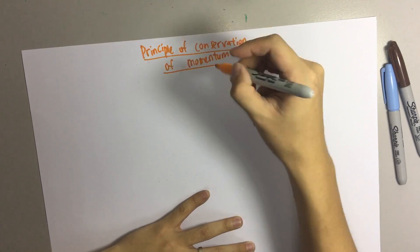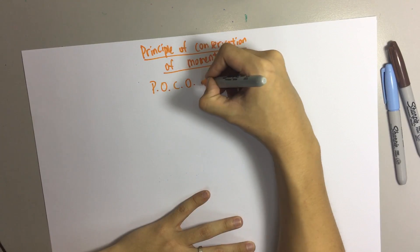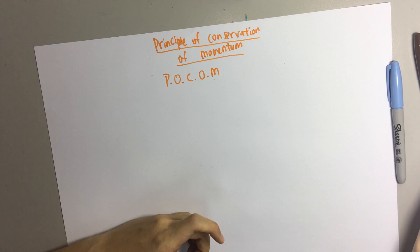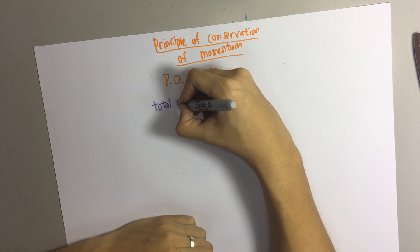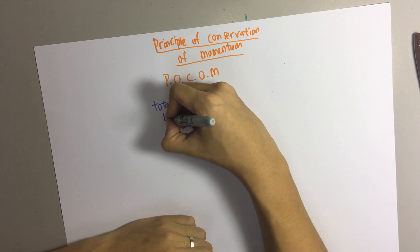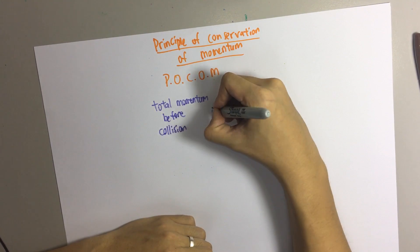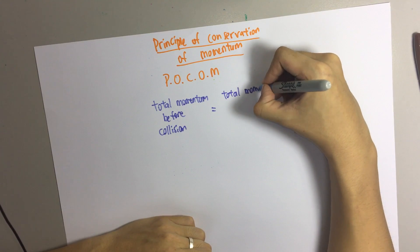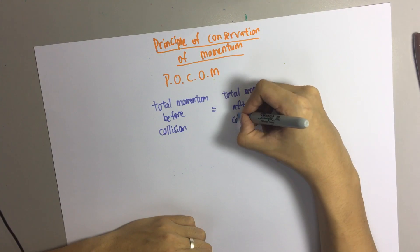We have a shortcut for this principle — we can call it POCOM. So what does POCOM tell you? POCOM tells you that the total momentum before collision will be equal to the total momentum after collision.